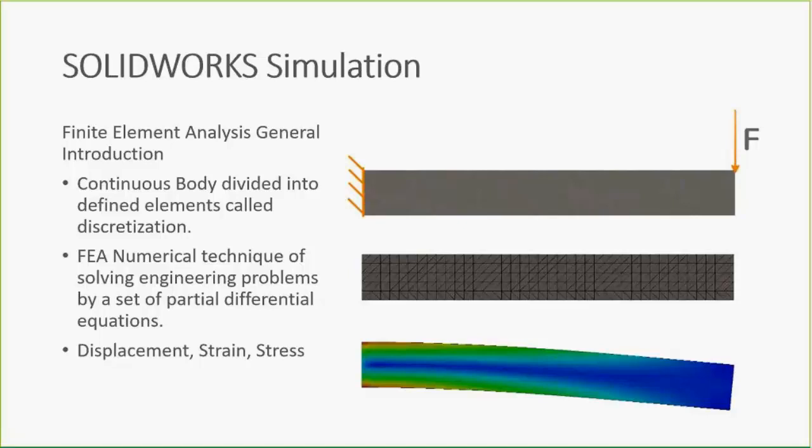The cantilever beam has a force on one end and a fixture on the other. It's really a continuous problem, and we need to tell the software how to discretize that or break it up — that is where the mesh comes into play. It's part of the finite element analysis. From there, all of your partial differential equations are solved for displacement, then strain, then stress, and we get those engineering values out of the software to give us a feel for our design.